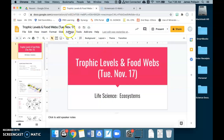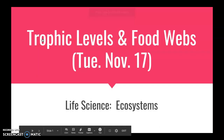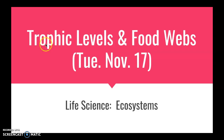Good morning everyone. Today we are building off of what we learned yesterday about the different trophic levels in ecosystems and in food chains, but now we're going to apply it to food webs. As we've learned a couple weeks ago, food webs are more realistic in an ecosystem because you and I eat more than one thing for energy — a lot of animals and other organisms do too. They get their energy from multiple sources.